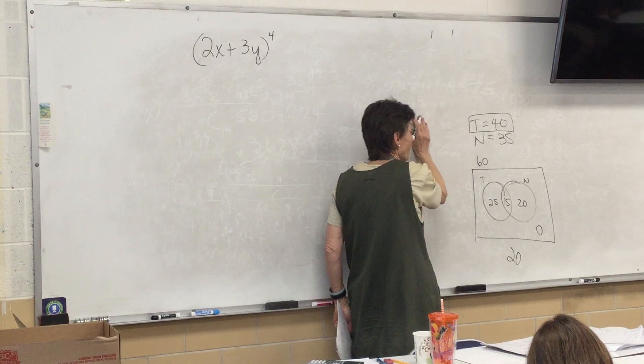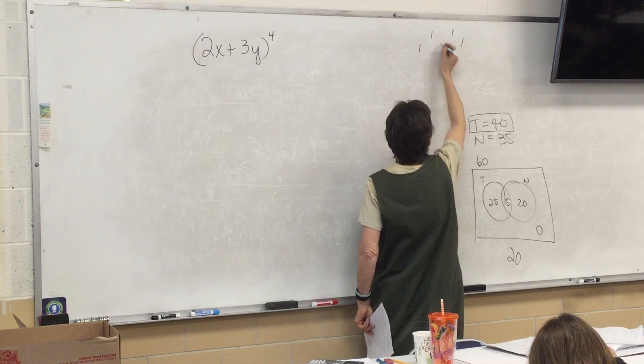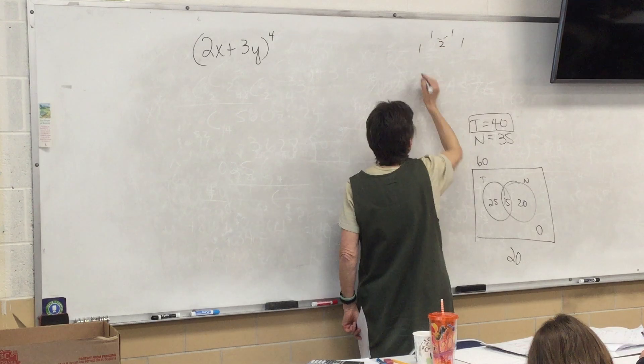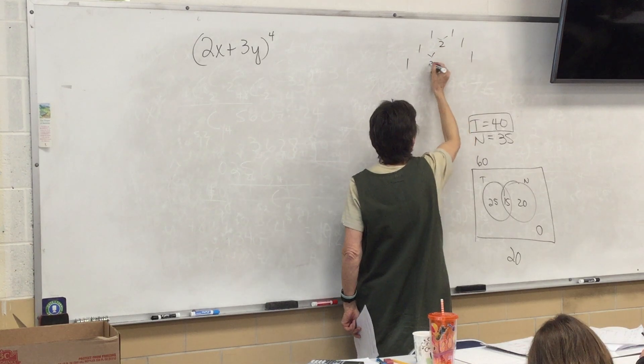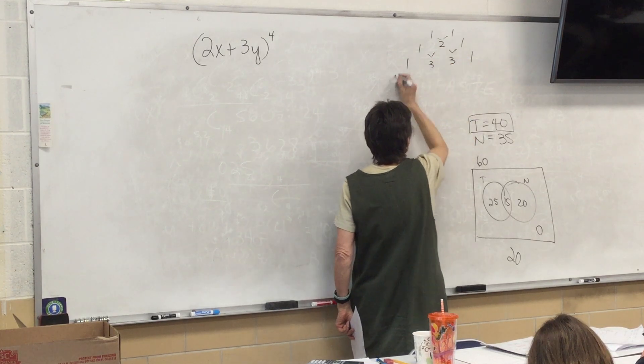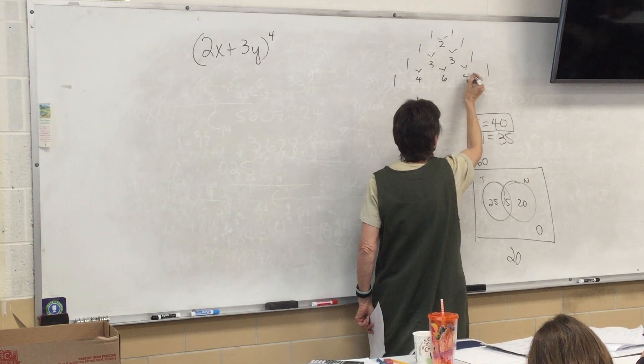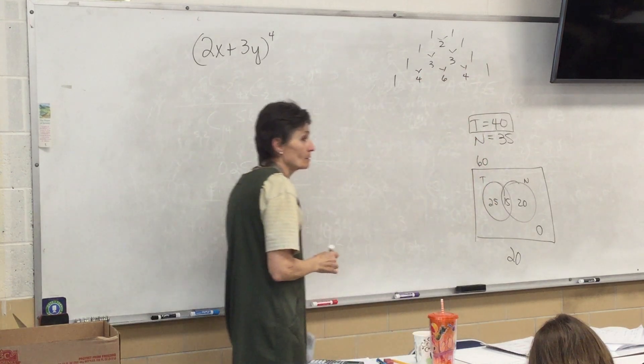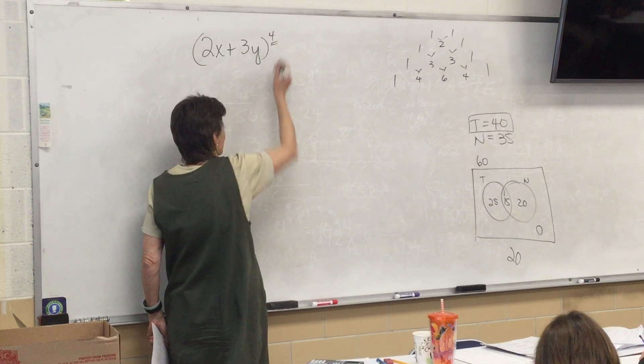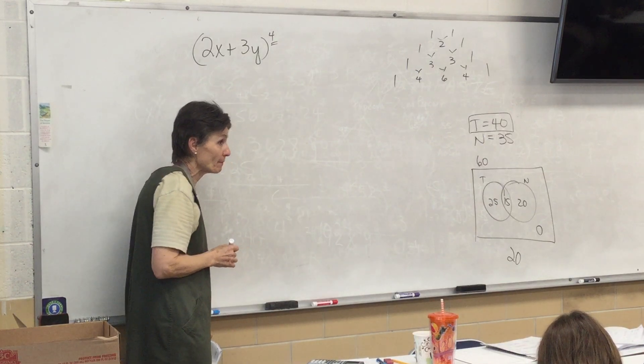Starts with a 1 and a 1 at the top, right? 1, 1, 2. 1, 1, 3, 3. 1, 1, 4, 6, 4. So I'm only going that far because that number tells me which row to look at. So I'm going to write down 1, 4, 6, 4, 1.